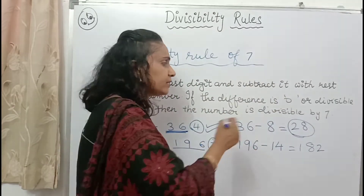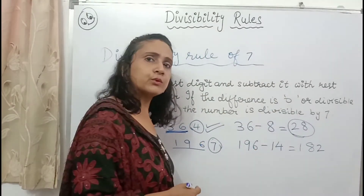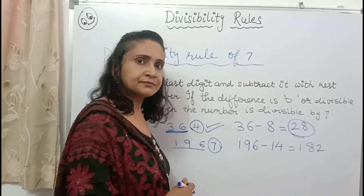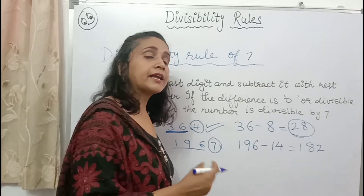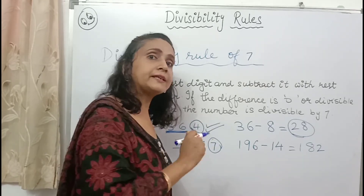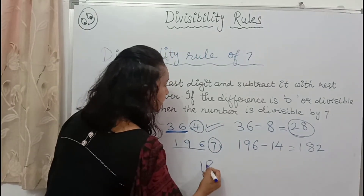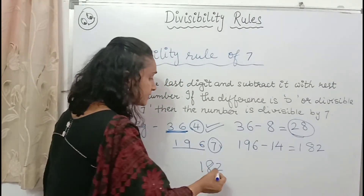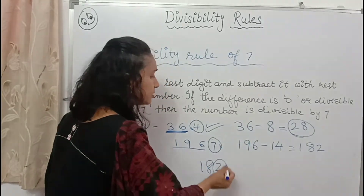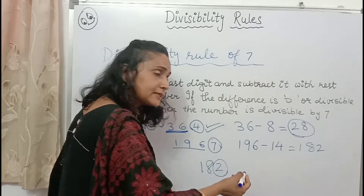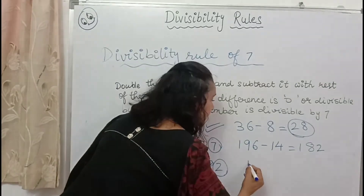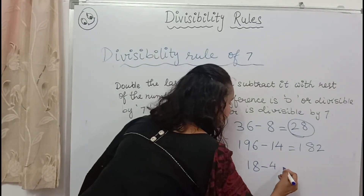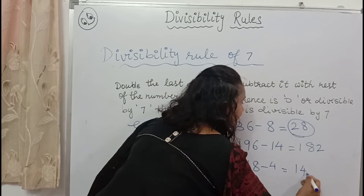Now we have 182. I don't know whether it is divisible by 7 or not. What will we do? We can repeat the step. For 182, the last digit is 2. Double it to get 4. The rest of the number is 18. So 18 minus 4 gives us 14.